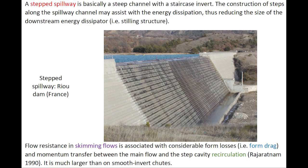Flow resistance in skimming flow on the step spillway is associated with considerable form losses and momentum transfer between the main flow and the step cavity recirculation. It is much larger than on smooth invert chutes.